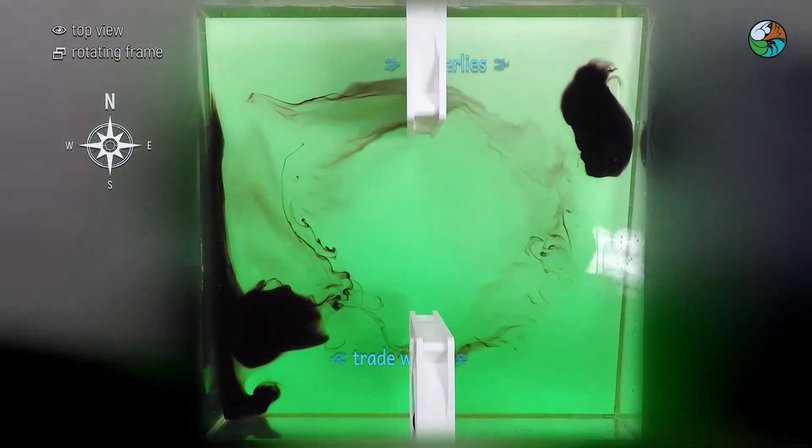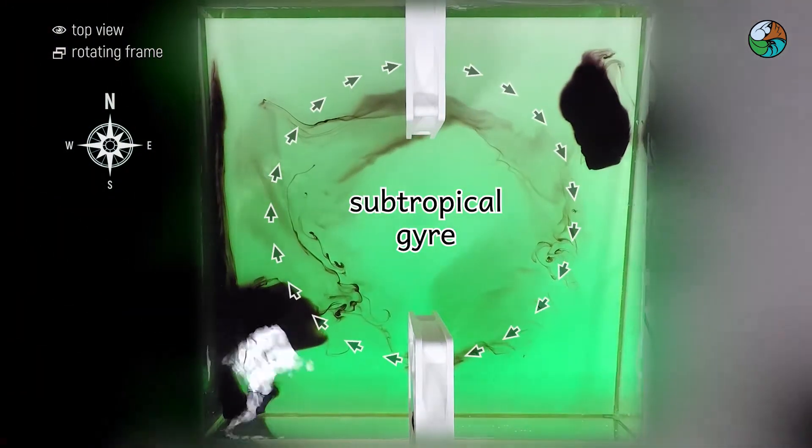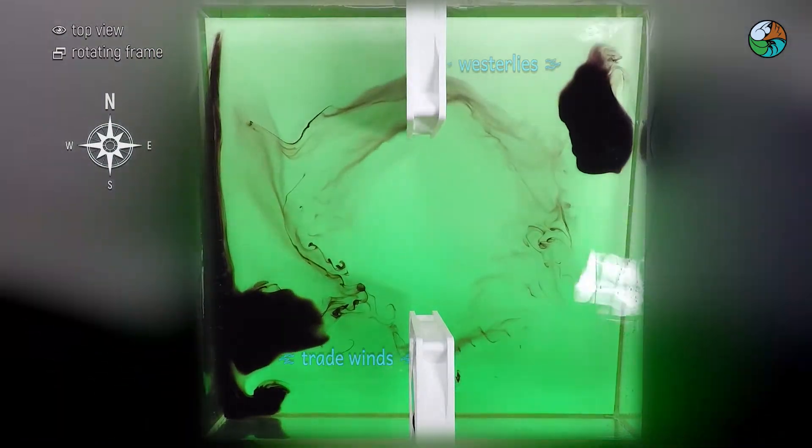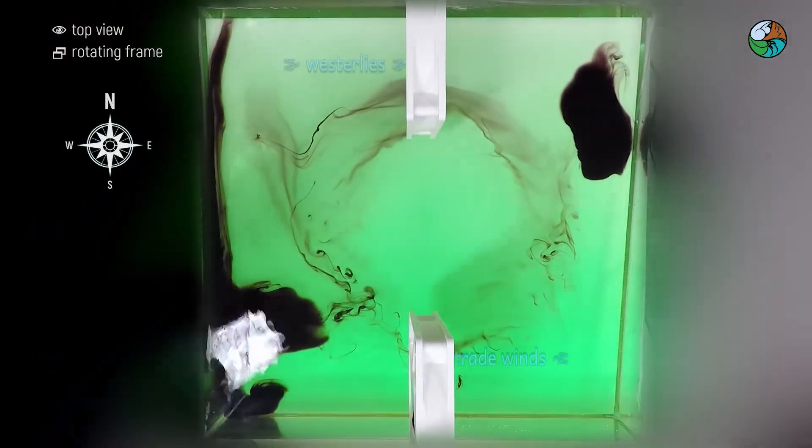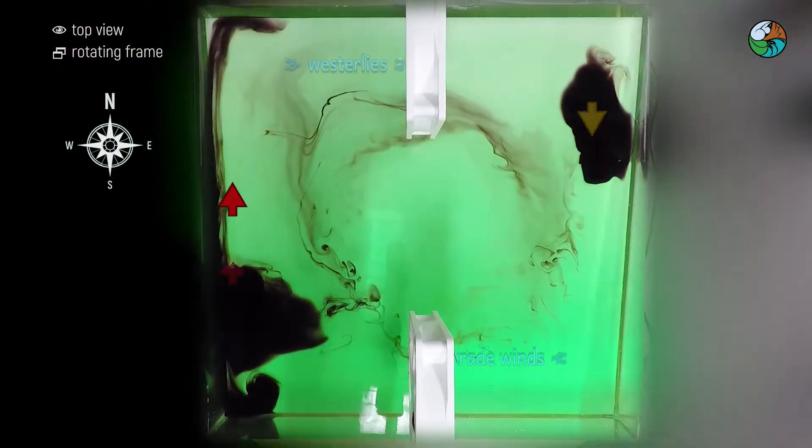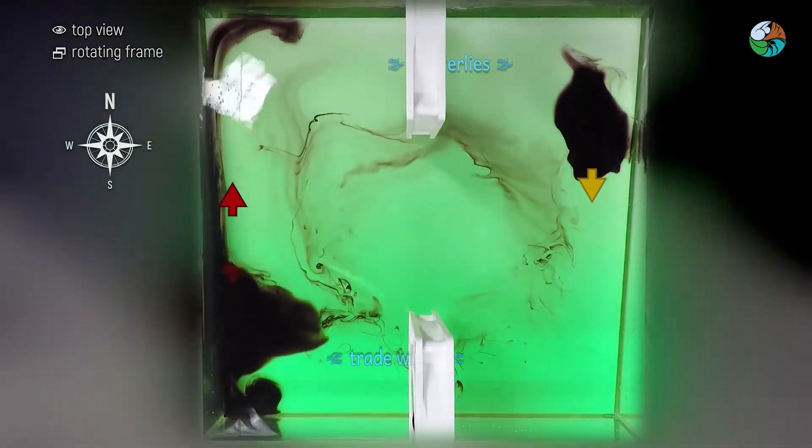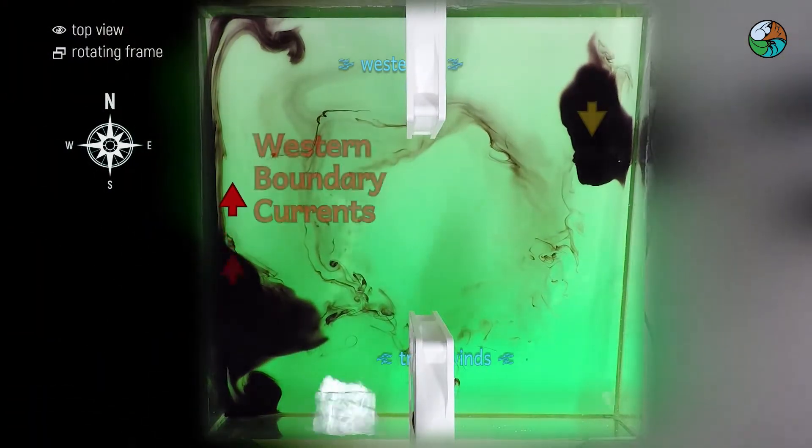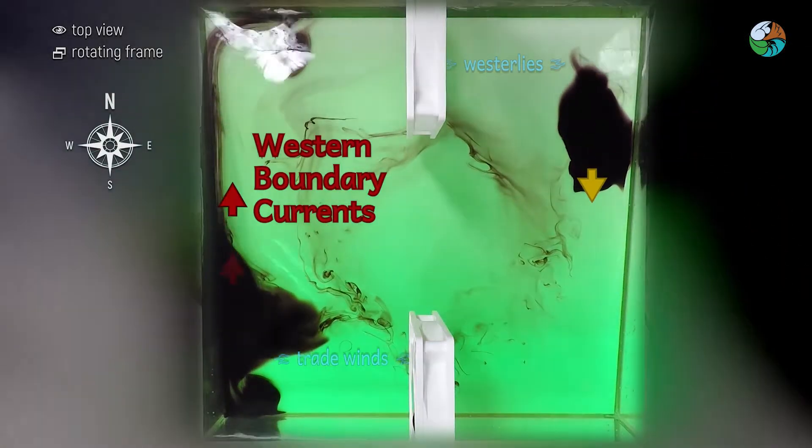The fans generate a subtropical gyre that circulates anticyclonically. In this circulation pattern, the dye in the southwest corner travels northwards much faster than the dye in the northeast corner travels southwards. This clearly demonstrates the presence of western boundary currents.